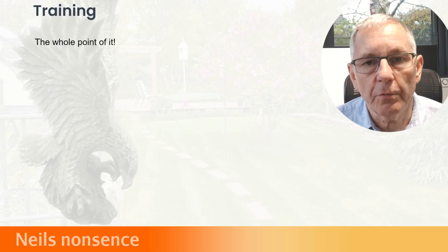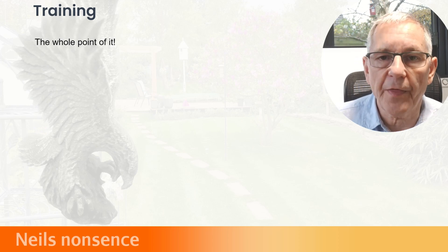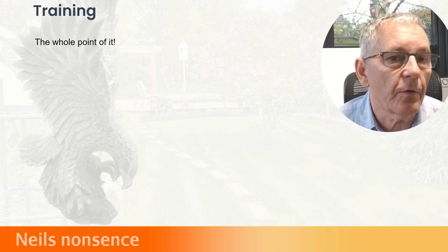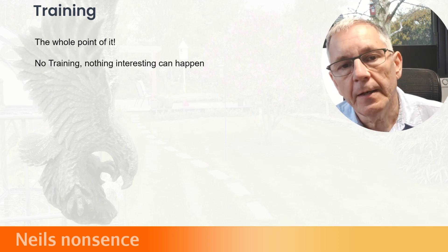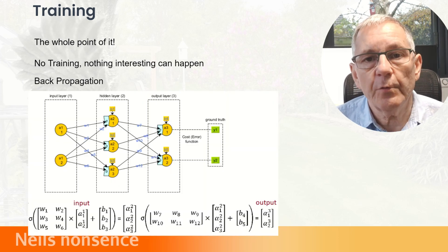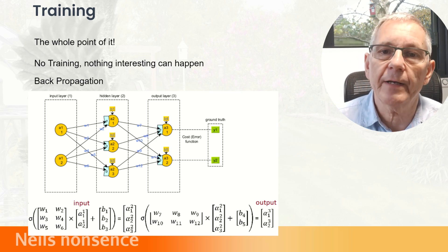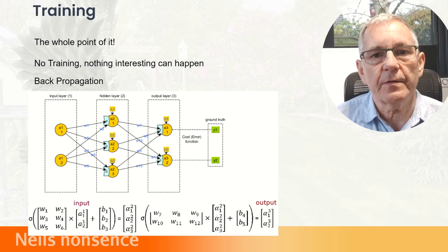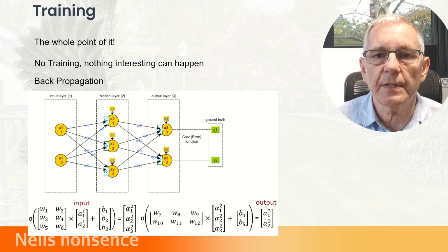Now, a neural network is pretty useless without training, because it will just do one thing — whatever numbers you set in to seed the network, those are the numbers that will be used to create an output, and they will never change without training. The traditional most popular way of training a neural network is back propagation. Back in 2011, I took one look at that formula and just couldn't get my head around it — I ran for the hills. So I started thinking there must be another way, and that's when I started looking at natural selection.